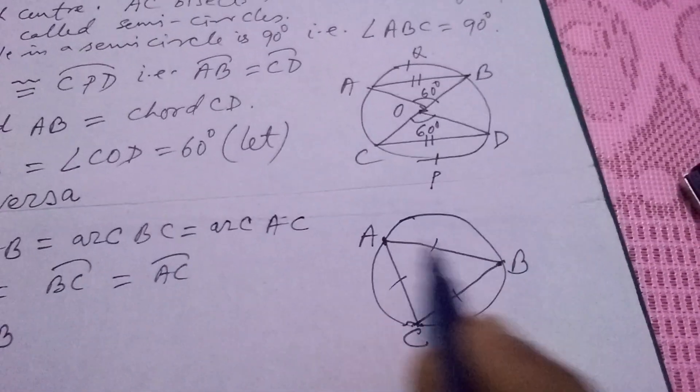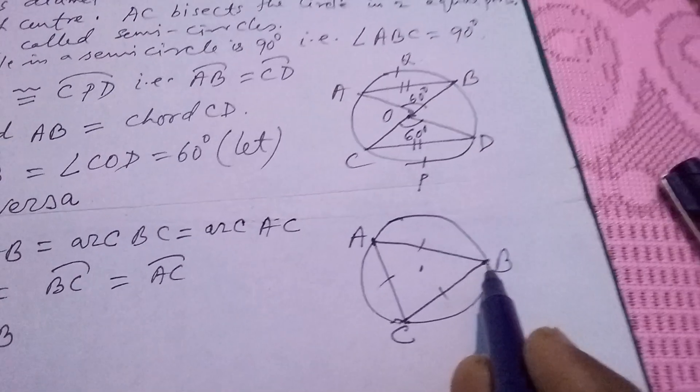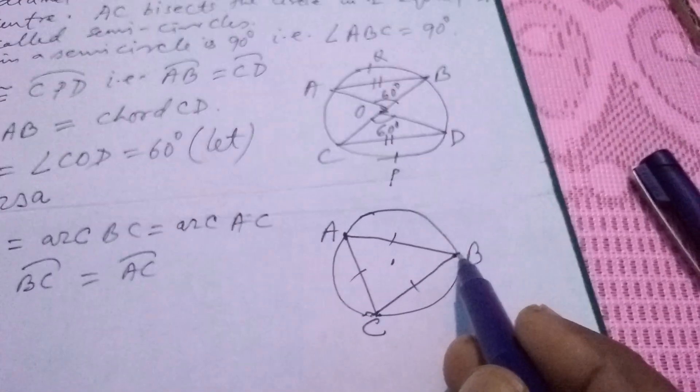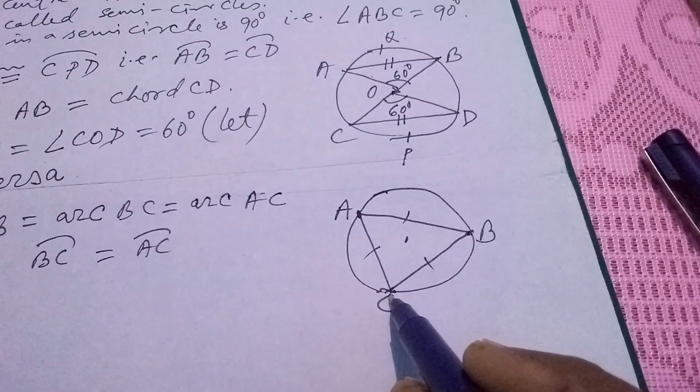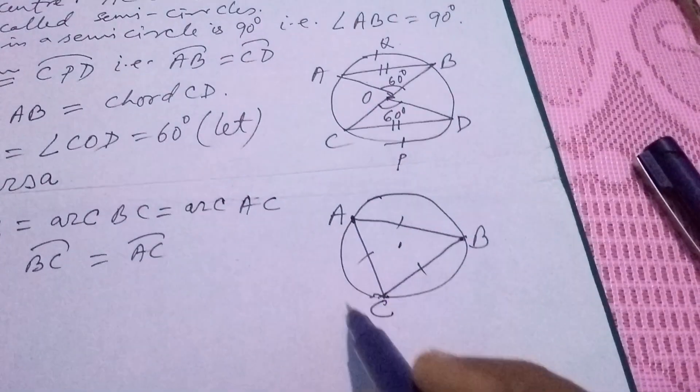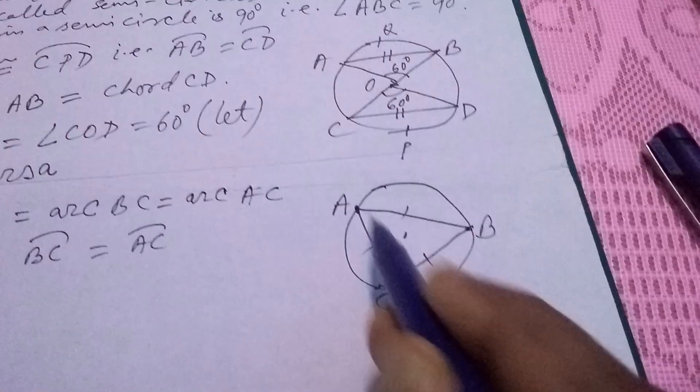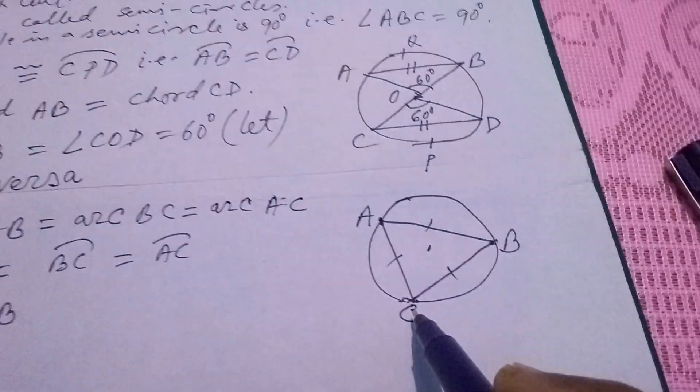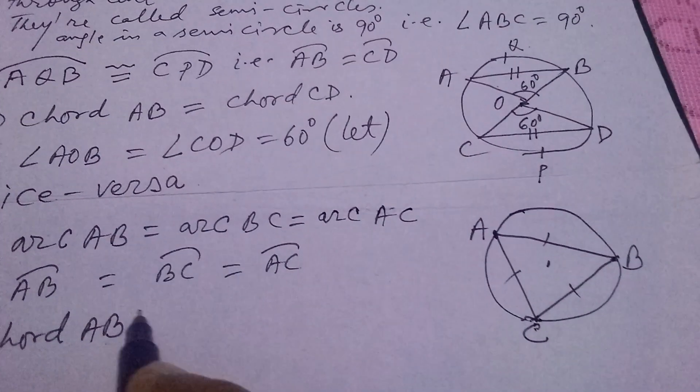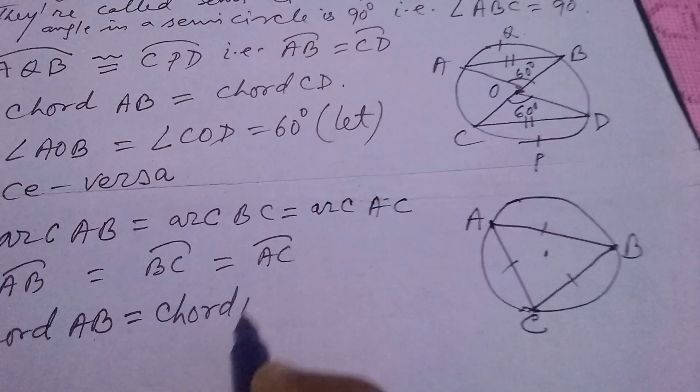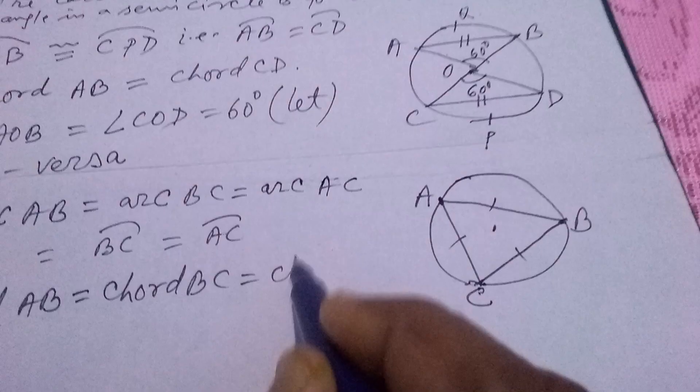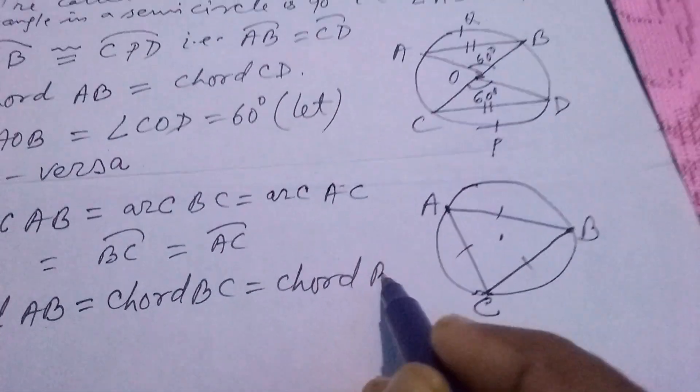A and B I have joined, then AB is formed chord. BC arcs, extreme points of B and C, B and C I have joined, then it forms BC chord. In the same way, arc AC is, extreme points are A and C, and this has been joined, then AC chord I got. So, arc BC equals to chord BC. Arc AC means chord BC.